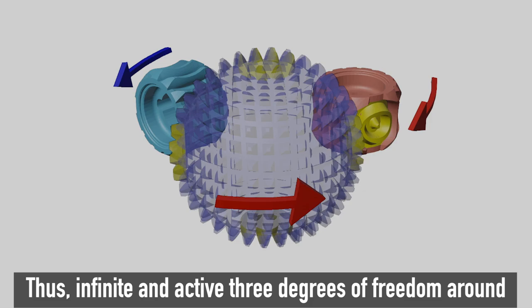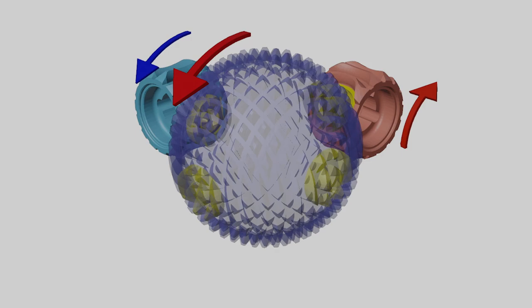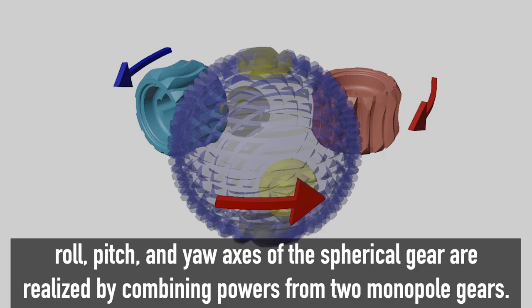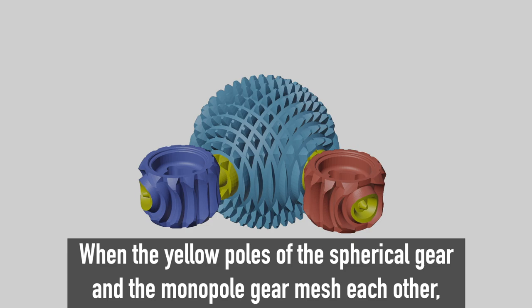Thus, infinite and active three degrees of freedom around roll, pitch, and yaw axes of the spherical gear are realized by combining powers from two monopole gears.